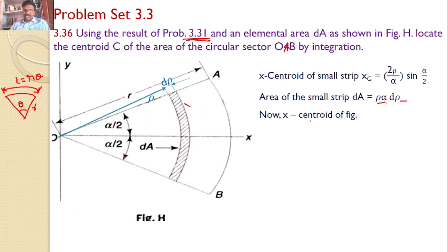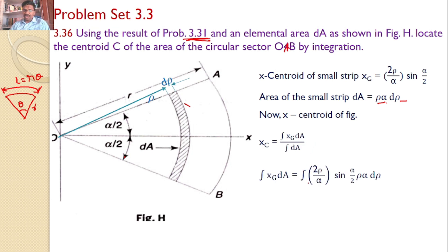The x-coordinate of the centroid for the total area is x_c = ∫x_g dA / ∫dA. That equals the integral of (2ρ/α)·sin(α/2) · ρ·α·dρ. The integration variable is rho, varying from 0 to r.